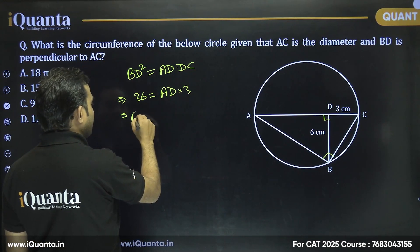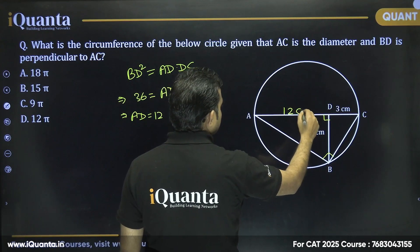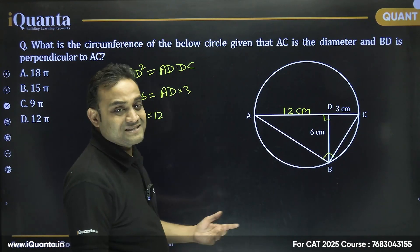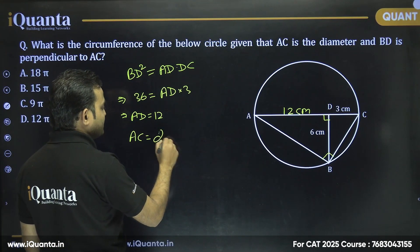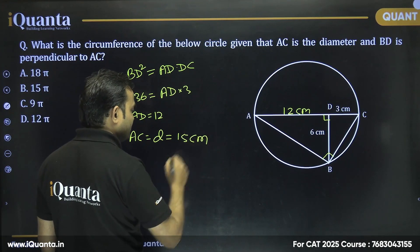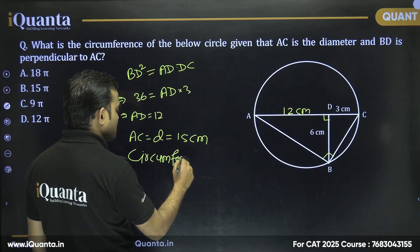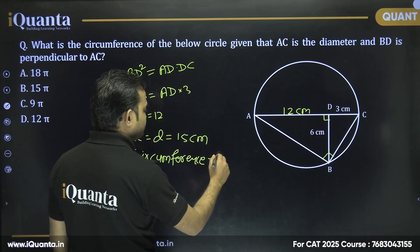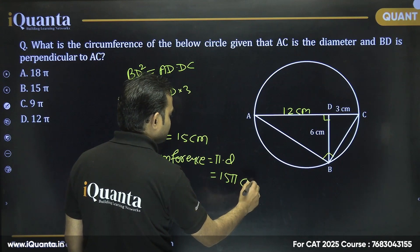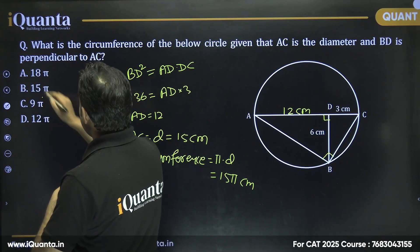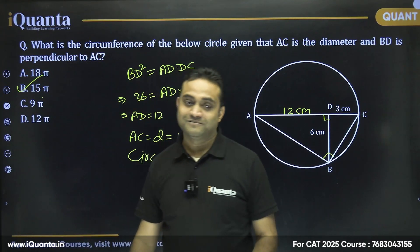So AD will be equal to 12. This length AD is 12 centimeters. Now we need to find the circumference. The whole diameter AC is equal to 15 centimeters. The circumference of a circle is π × d, so this will be 15π centimeters. Our answer is option B.